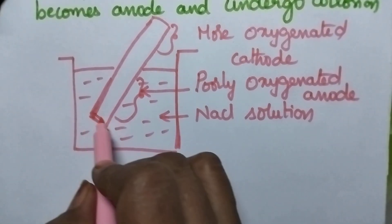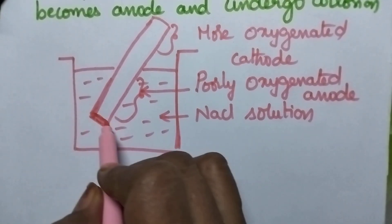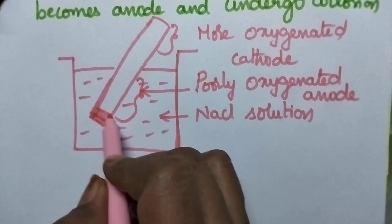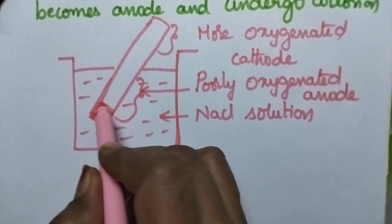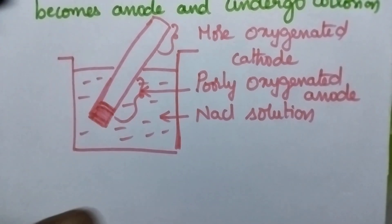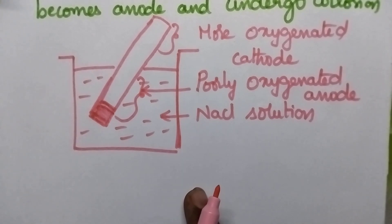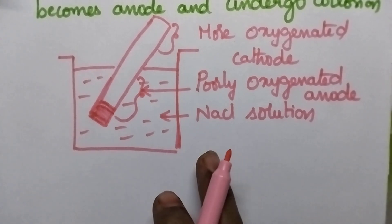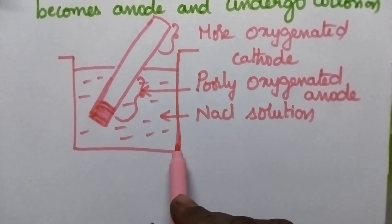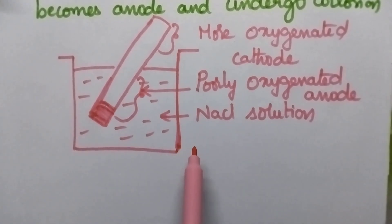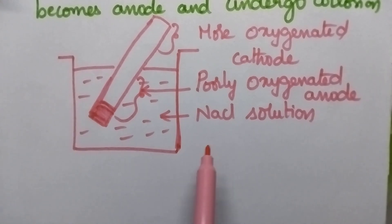With the result, the corrosion product will be deposited at the bottom. It is a good example of differential aeration corrosion. This type of corrosion arises due to the difference in the air or oxygen concentration.